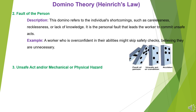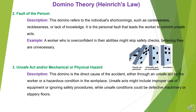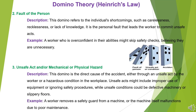Domino 3 — Unsafe Act and/or Mechanical or Physical Hazard: This domino is the direct cause of the accident, either through an unsafe act by the worker or a hazardous condition in the workplace. Unsafe acts might include improper use of equipment or ignoring safety procedures, while unsafe conditions could be defective machinery or slippery floors. Example: A worker removes a safety guard from a machine, or the machine itself malfunctions due to poor maintenance.